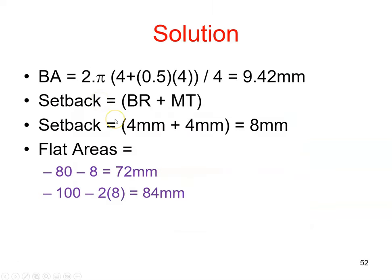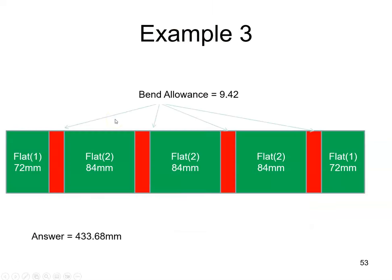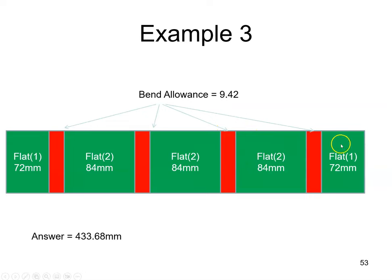We can now mark out our aluminium. We have a flat of 72 millimetres, our bend allowance, another flat of 84 millimetres, bend allowance, another flat of 84 millimetres, bend allowance, another flat of 84 millimetres, bend allowance, and then our final 72 millimetres. So we would need 433.68 millimetres to make that piece.